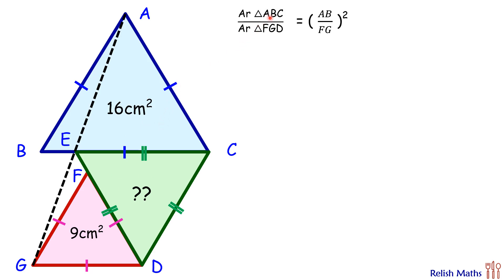Putting the values, area is 16 and 9, so 16 upon 9 equals AB upon FG squared. Solving it, we'll get the ratio of the sides AB and FG. The ratio of sides is 4 is to 3.